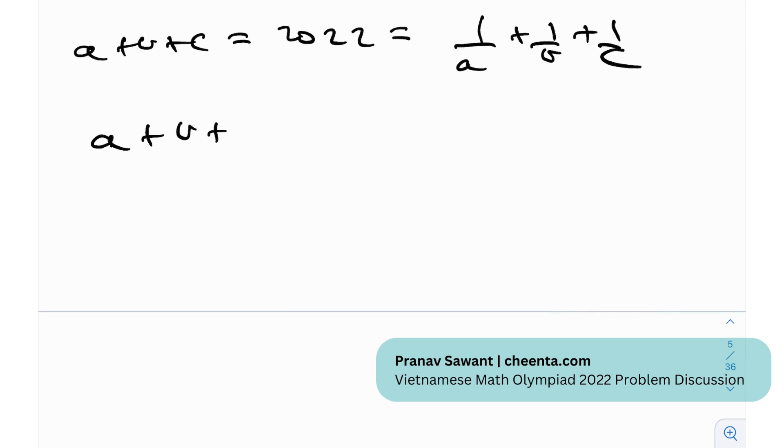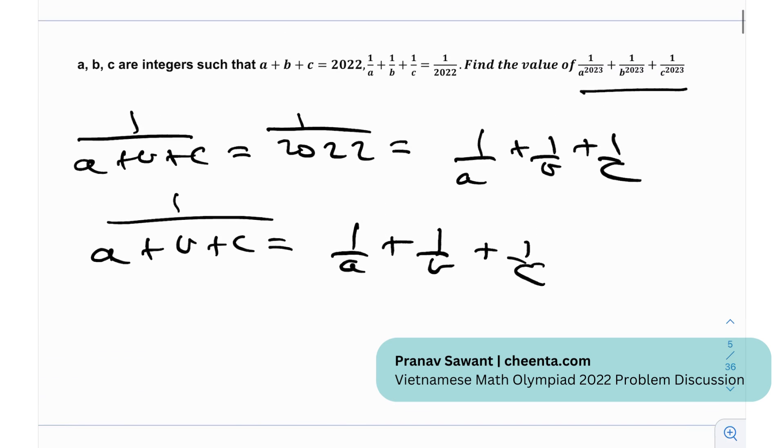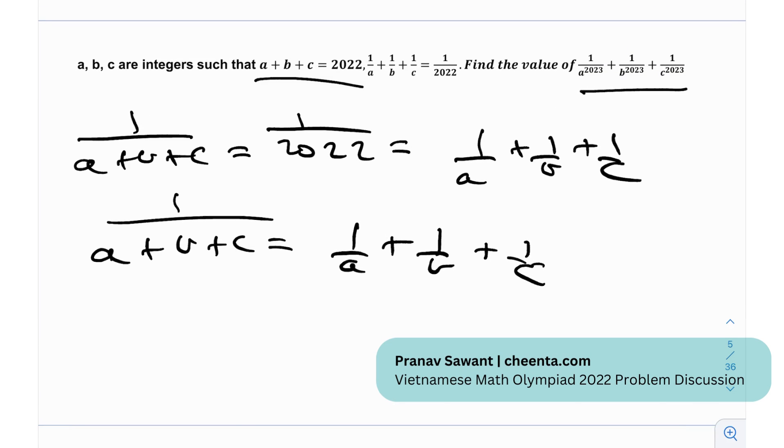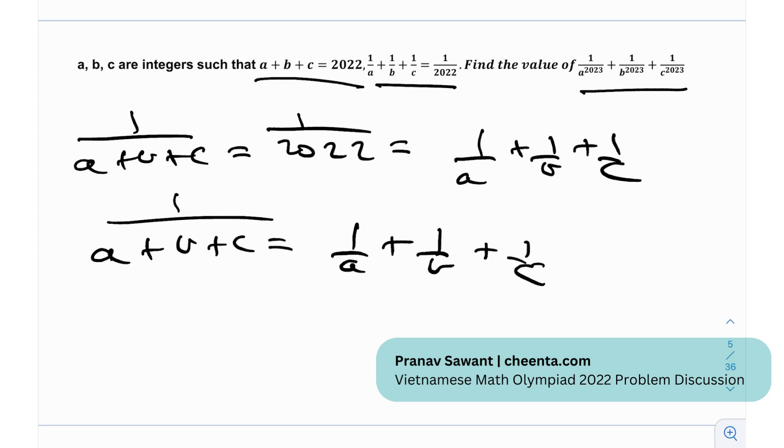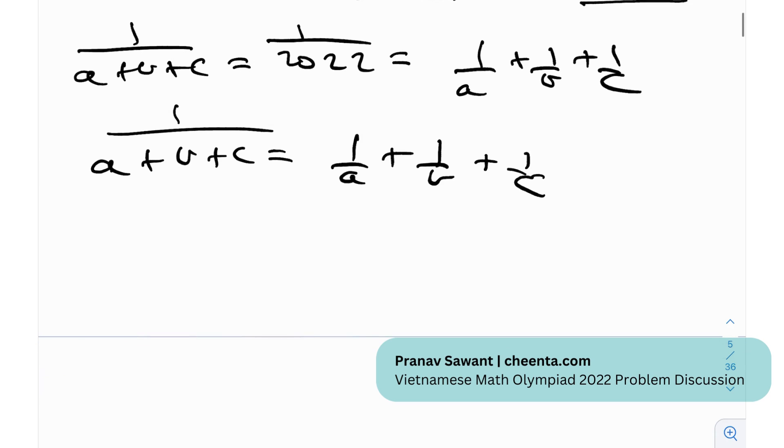So essentially a plus b plus c is equal to 1/a plus 1/b plus 1/c, okay? Sorry, 1 by a plus b plus c, right? Because this would be this. Sorry about that. Because, yeah, a plus b plus c is 22 and 1/a plus 1/b plus 1/c is 1/22, right? So it would be something like this. Okay, so let's see how we can proceed.